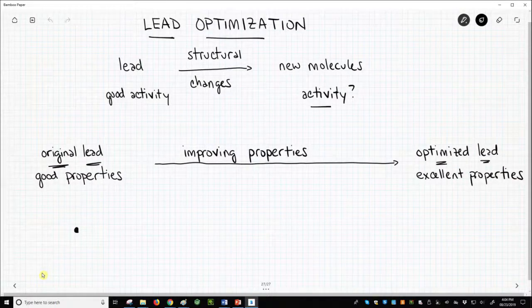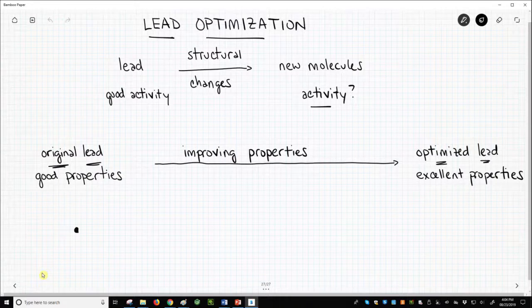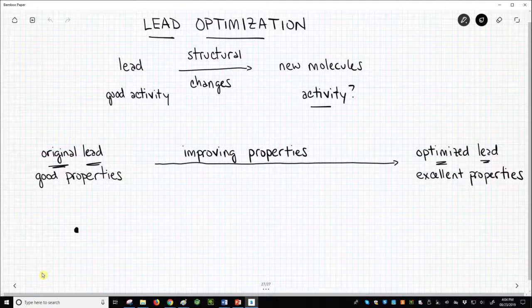Most of the lead optimization process is performed by organic chemists who make structural changes to the lead with the hope that the changes will result in a new lead with even better activity.